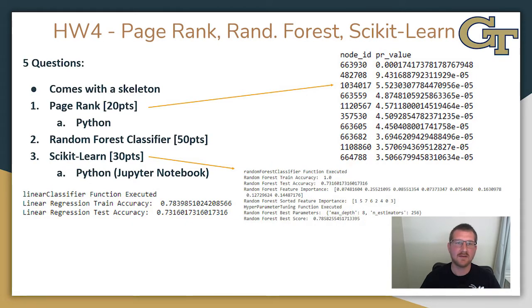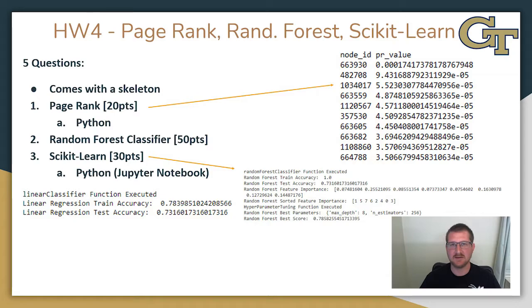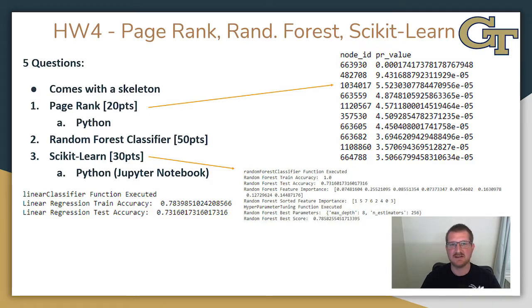Finally, Homework 4 — the final assignment — is only three questions and they focus on machine learning. There isn't too much to say about this one. It's in the middle of the pack in terms of difficulty, and at this point in the course you're really more focused on the project than the homeworks. For me, I didn't get a ton of new learning from this homework, but that may be because I've already taken a bunch of courses in machine learning, and that is my chosen specialization.